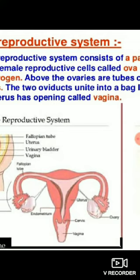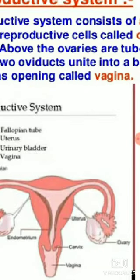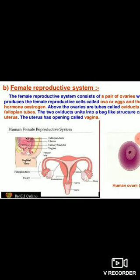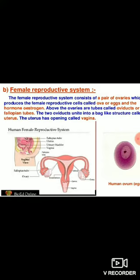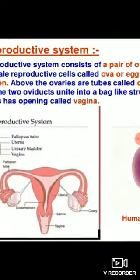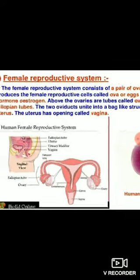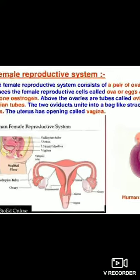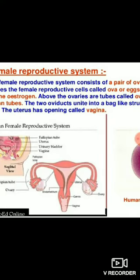Now this is the female reproductive system — the same diagram as given in your book. The female reproductive system consists of a pair of ovaries, which are mainly responsible for the secretion of the female sex hormone estrogen, as well as for the production of eggs, which are the female gametes. The two ovaries produce eggs alternatively every month. Above the ovaries are the tubes called oviducts or fallopian tubes. These two oviducts unite into a bag-like structure called the uterus.